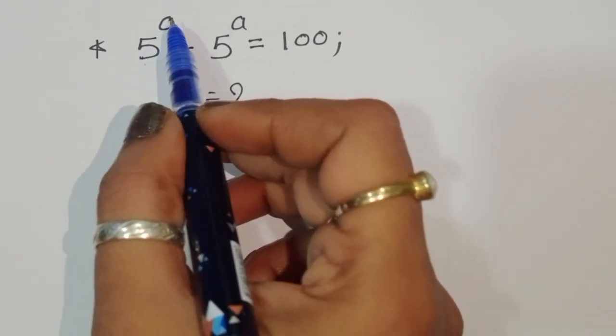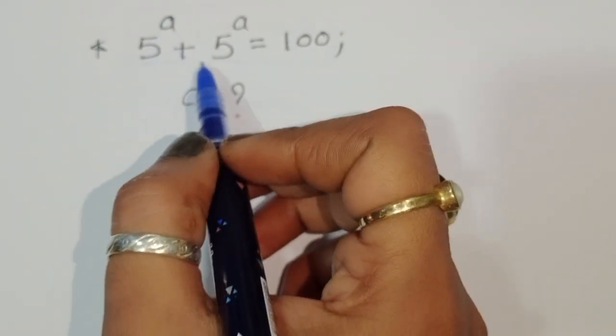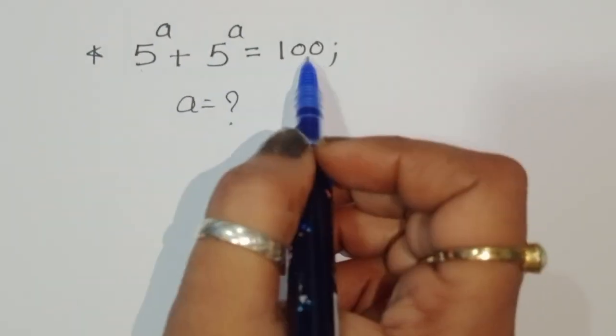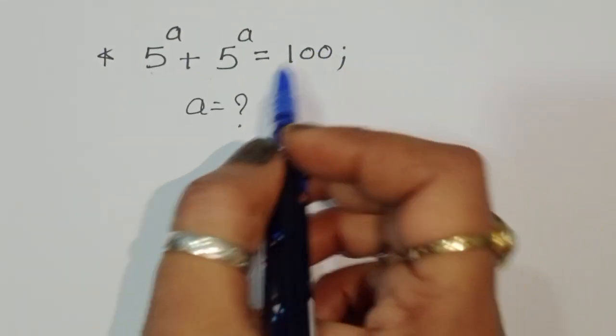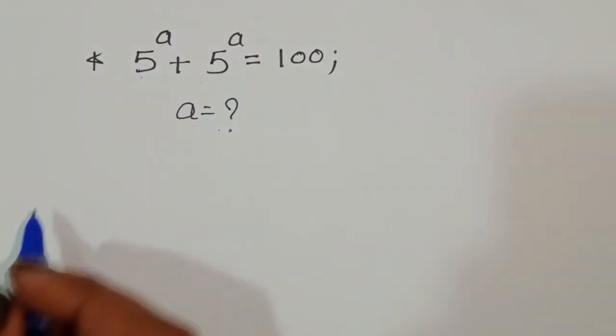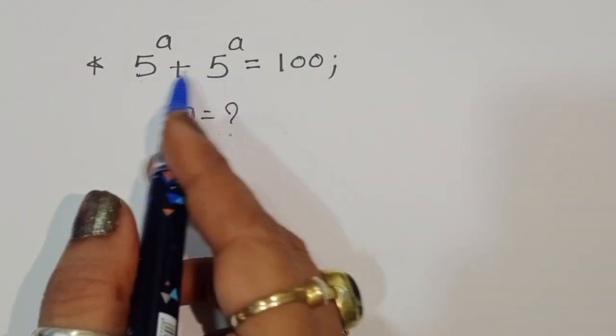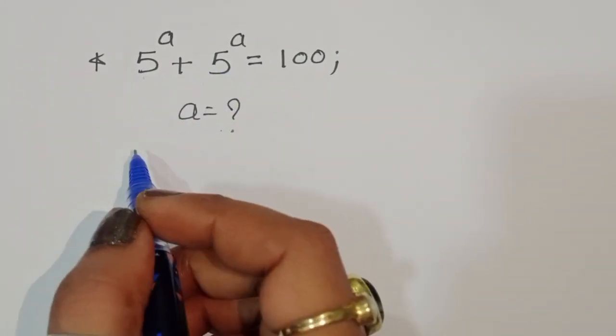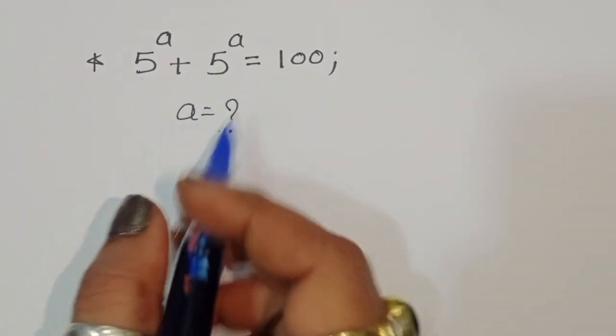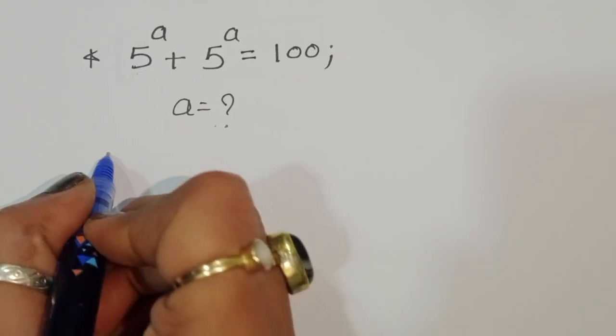The question is: given 5 power a plus 5 power a is equal to 100, we have to find out the value of a. How can we find the value of a in this equation? Let's see the solution.